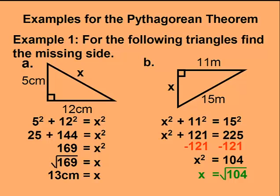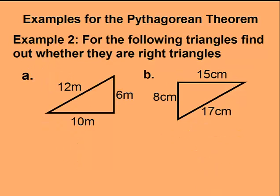giving us an answer of x equals the square root of 104. If we have a calculator, we can get an estimate for the square root of 104, which is 10.2 meters.